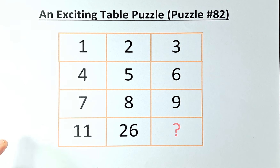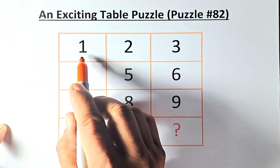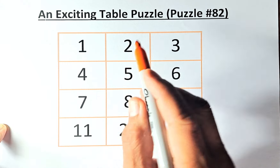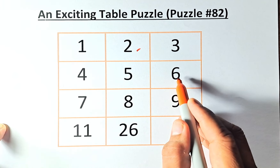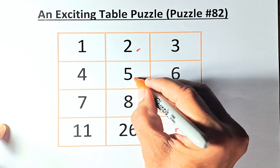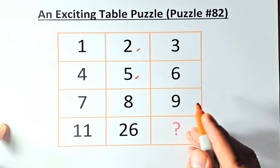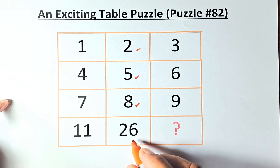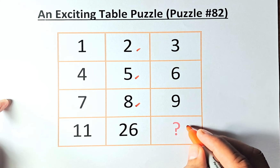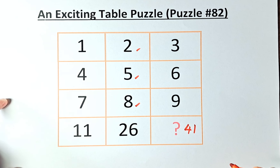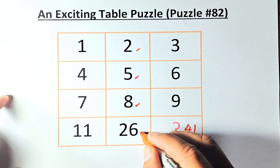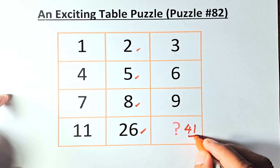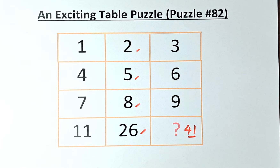The column solution will be easier. We compare the two outer numbers and take their average. 1 and 3 is 4, divide by 2 gives us 2. Similarly, 4 and 6 is 10, divide by 2 gives us 5. 7 and 9 is 16, divide by 2 is 8. So what number gives us 26 in the middle? 11 and 41 add up to 52, and 52 divided by 2 gives us 26. So the first answer is 41.